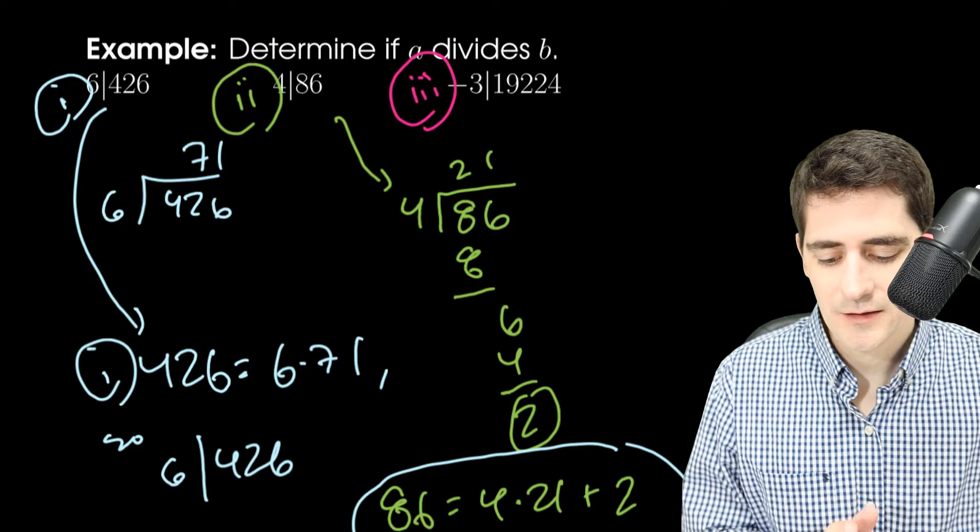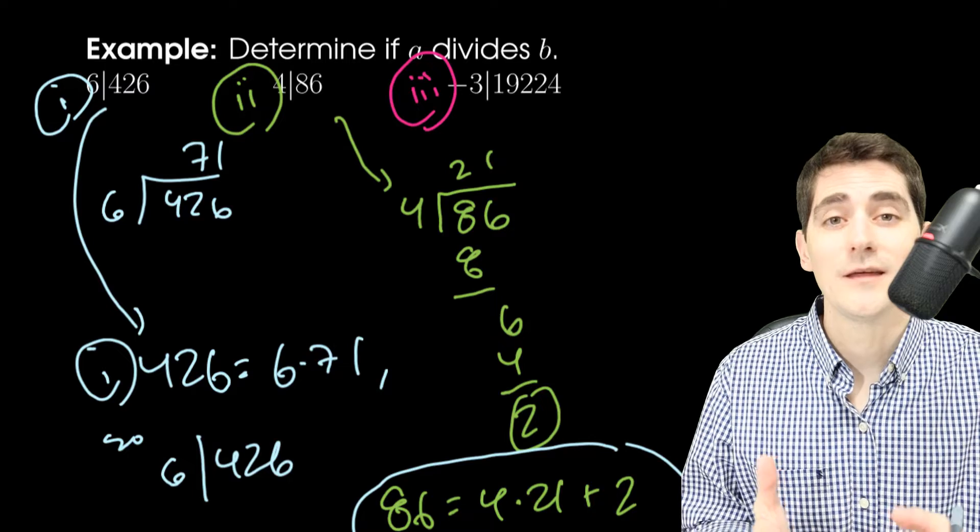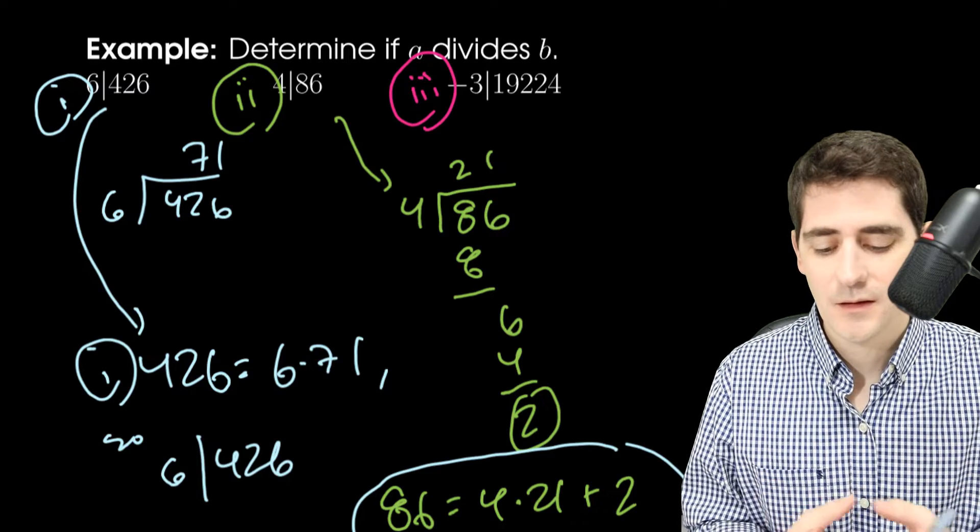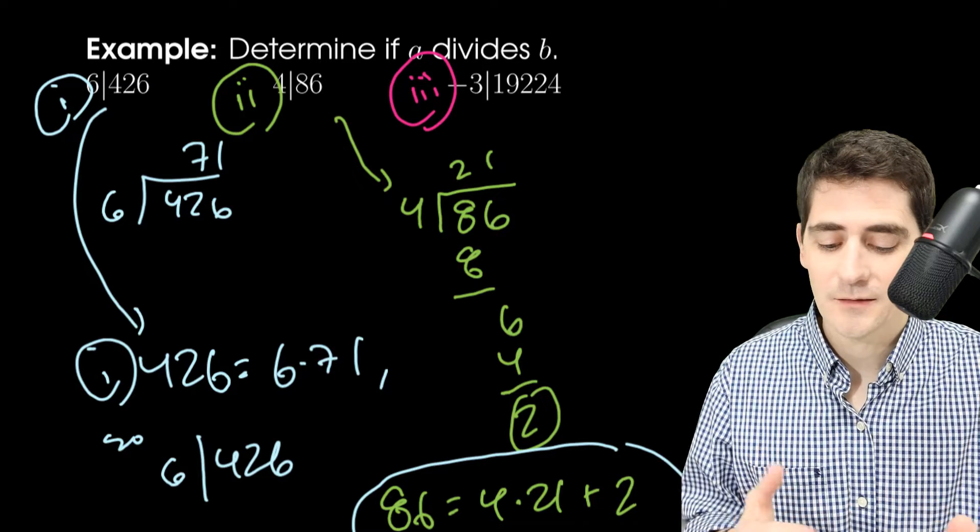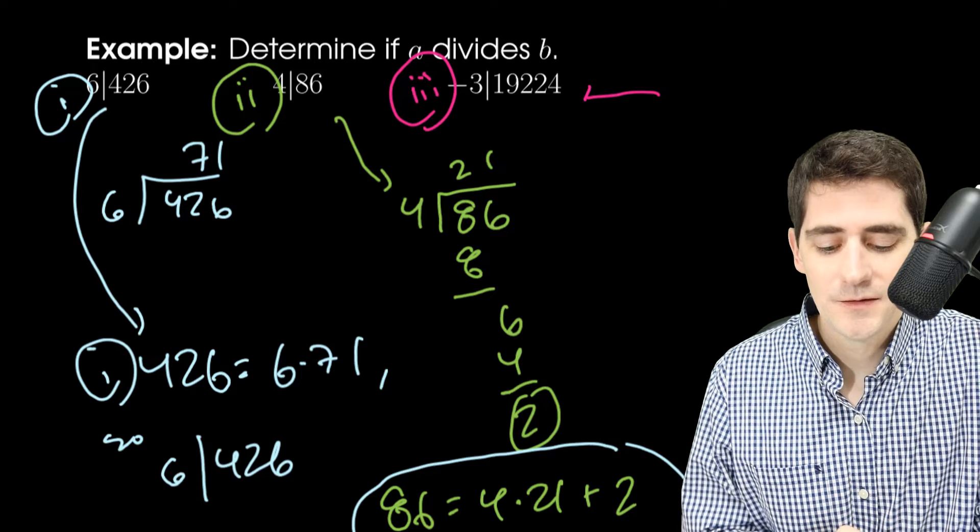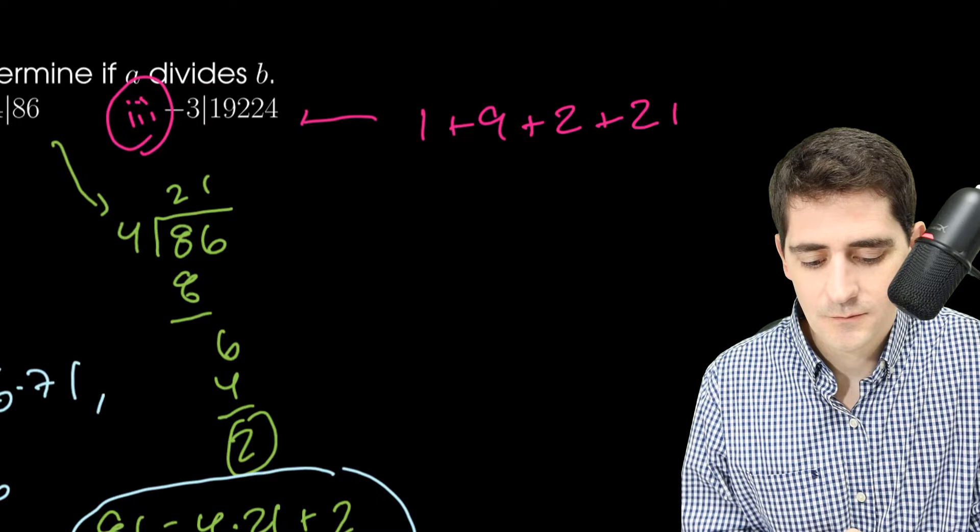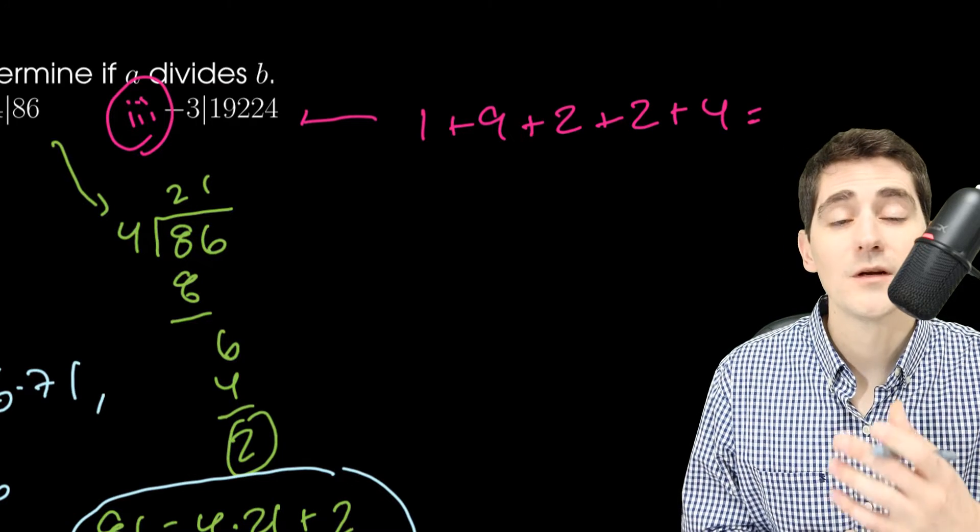Negative 3, does that divide 19,224? I can look at it and say that negative 3 does divide this quickly. Even though I don't know the exact arithmetic, what I do know is here's a little trick for 3's. If I add up the digits, I should get a multiple of 3.